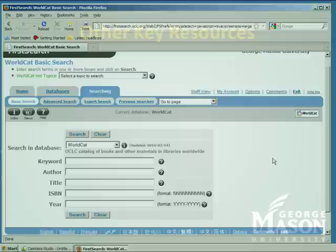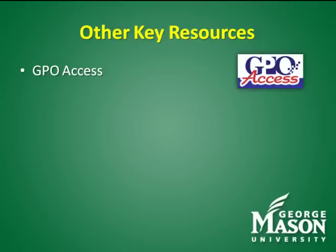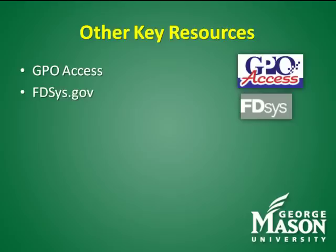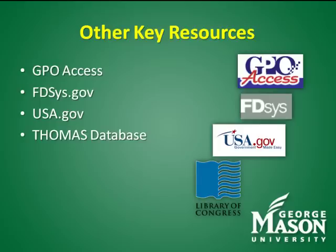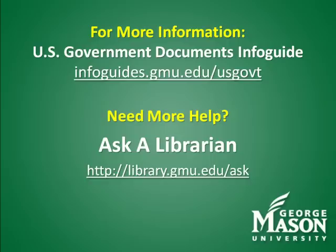There are several other key resources available to the Mason community. One of these is GPO Access, the online portal for the Government Printing Office. However, all of the material through this site is being migrated to FDSys, which is the GPO's new portal. Other resources include USA.gov, the Thomas database from the Library of Congress, LexisNexis Congressional, Hein Online, and many others. This tutorial has provided just a brief overview of government documents and resources at Fenwick Library. For more information about these resources, visit the U.S. Government Documents Info Guide at infoguides.gmu.edu/usgovt, or ask a librarian.